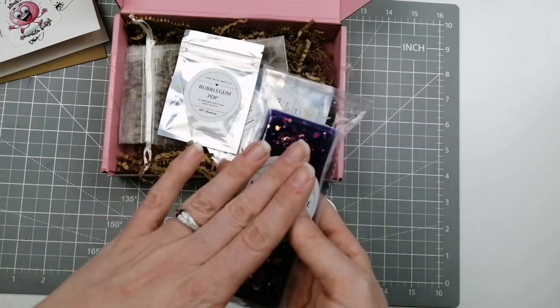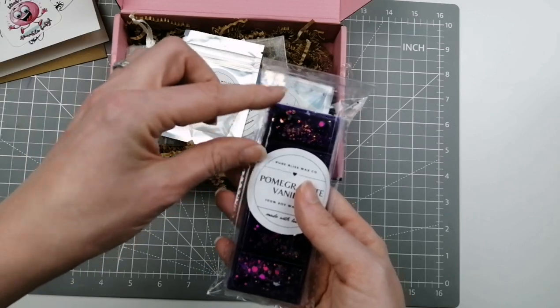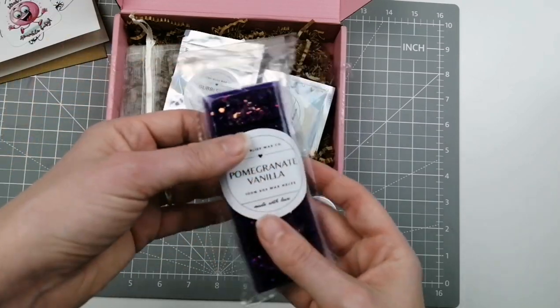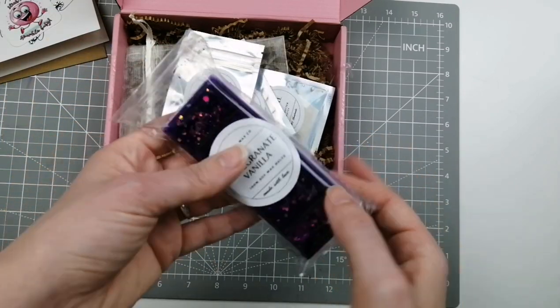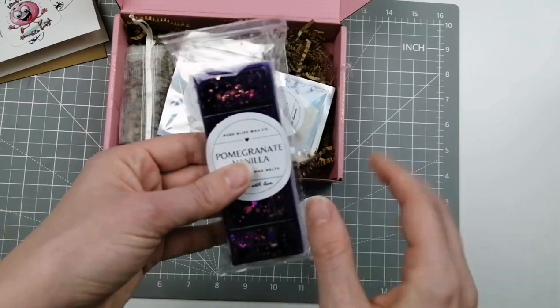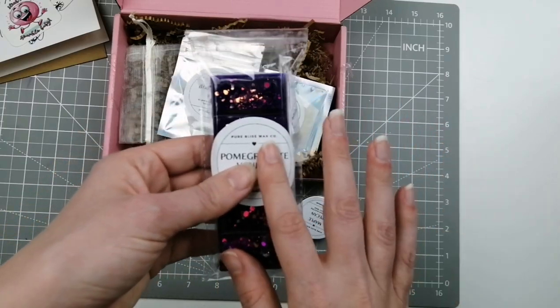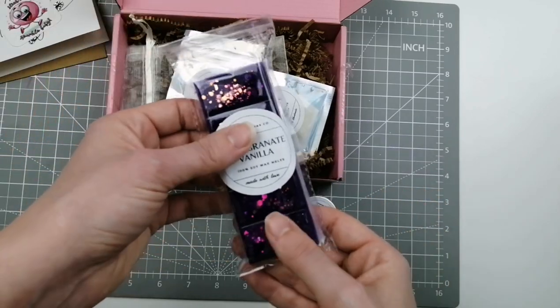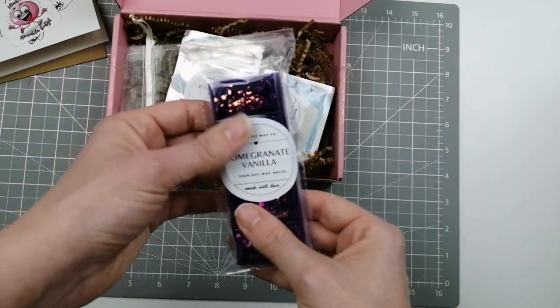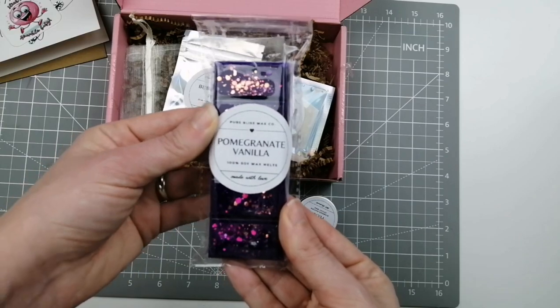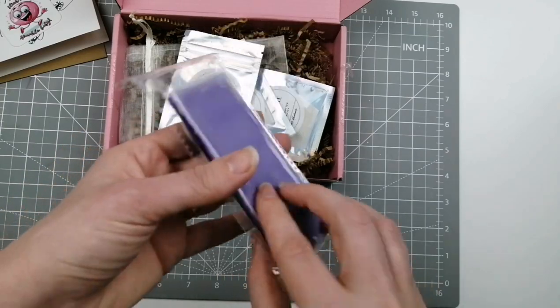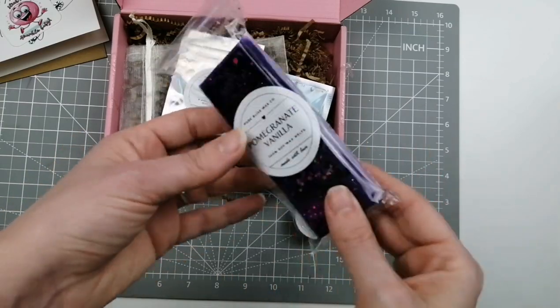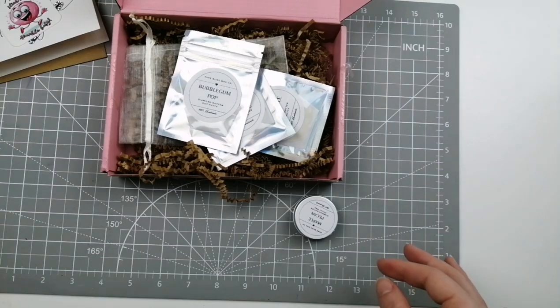The wax melts go into wax burners. You can pull a chunk or two chunks off, pop in a wax burner and they will scent your room a little bit like a candle but without having to have an open flame if you've got an electric one or a candle melting down into your wick if you're using separate little tea lights. So that is a wax melt in pomegranate vanilla. Thank you very much my lovely. I will try that and see what it's like.